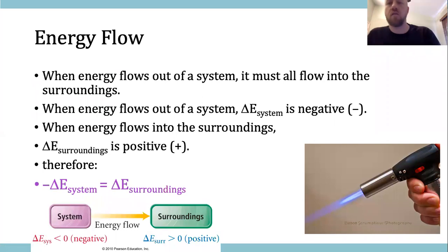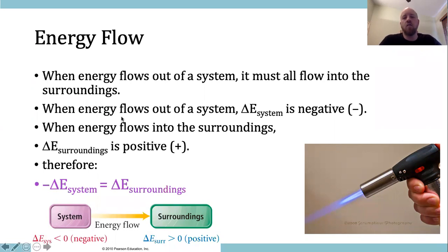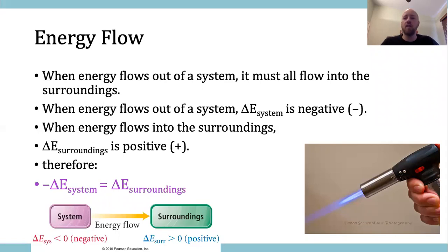This represents the second half of thermodynamics. This is really just a true property of things we've already talked about. The change in energy of the universe is zero — the overall change in energy is zero. So energy lost from the system is gained by the surroundings. Energy given off by the system is gained by the surroundings. They are equal and opposite in sign.